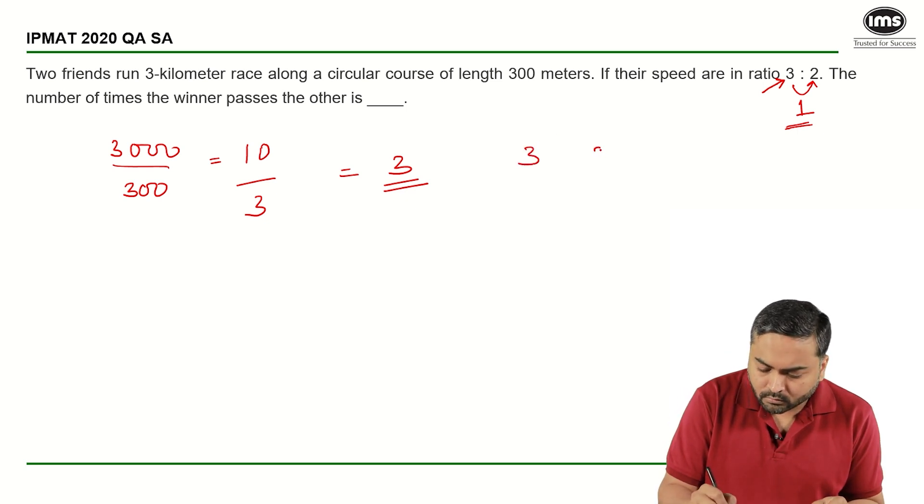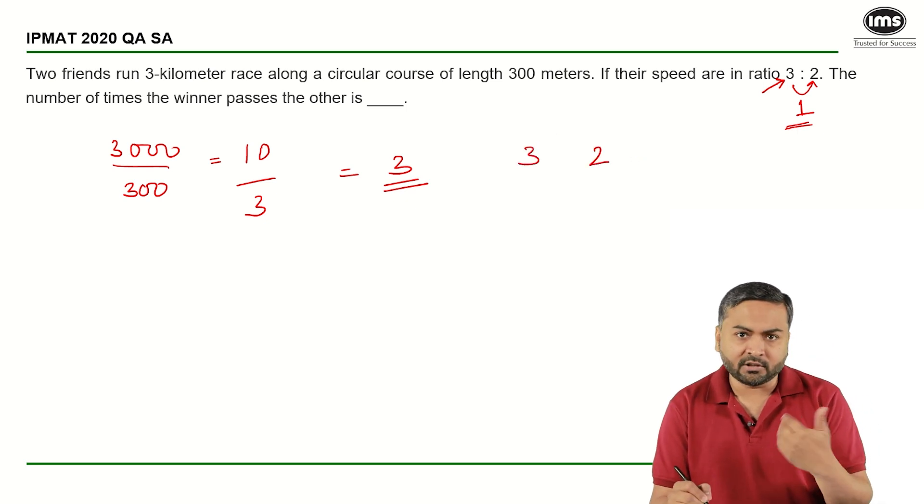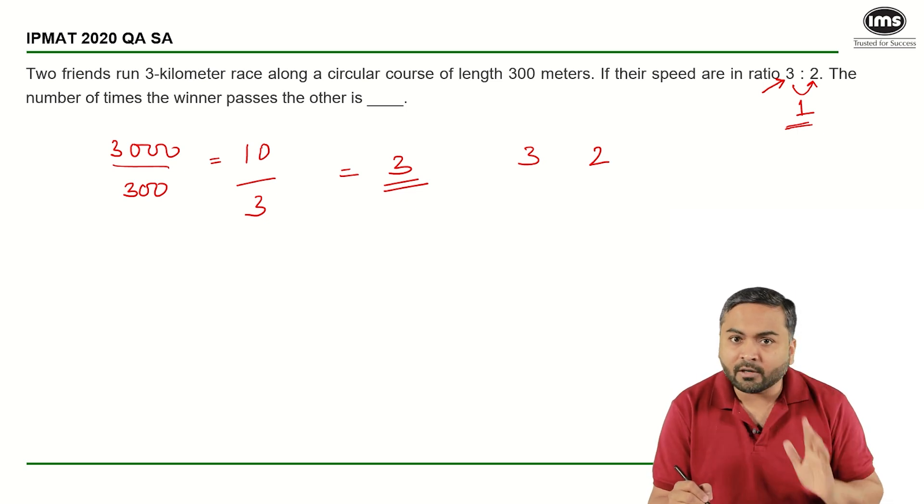So when the winner, the faster runner, travels 3 circumferences, the slower runner travels 2 circumferences. They would have met one time.